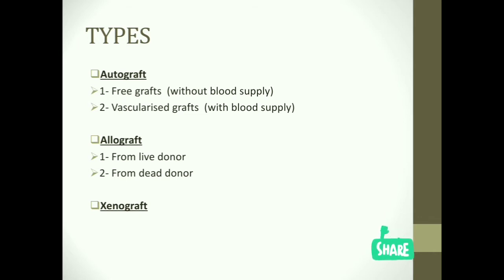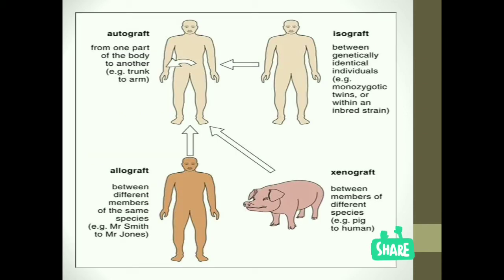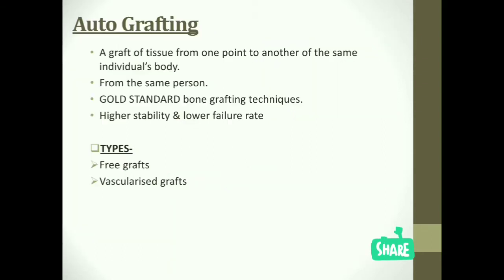A diagram clearly shows the difference between these types of bone grafting. Now, studying autografting in detail: 'auto' means self, so in autografting we take the graft from one point of the body and place it at another site of the same individual's body. Autografting comes under the gold standard bone grafting technique, providing higher stability and lower failure rate.